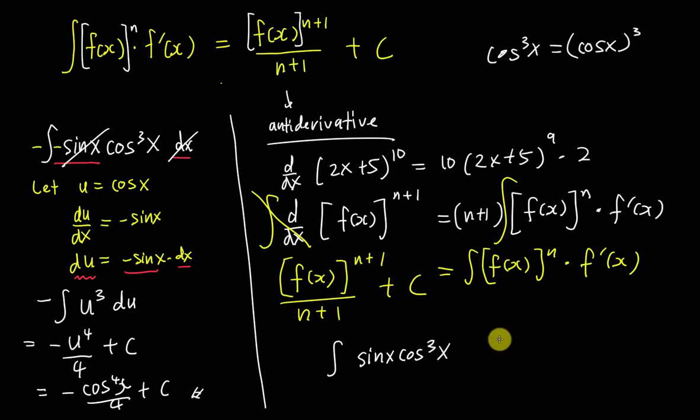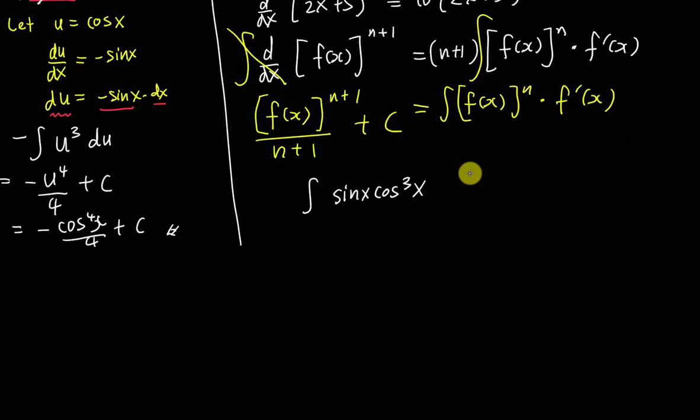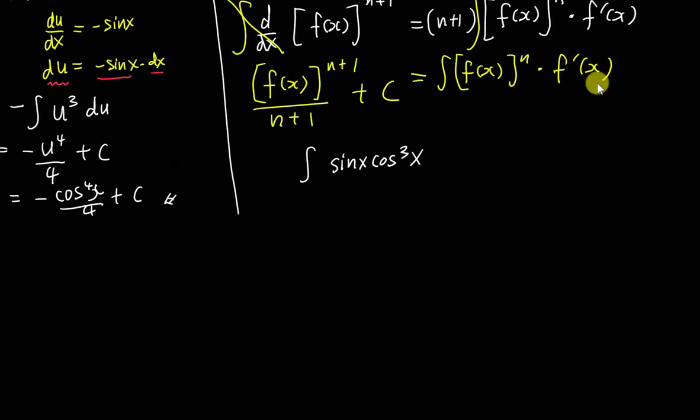If I want to use this formula, what I want to understand is: I can see this is like cos x to the power of 3, and then I must have something like the derivative of cos x. So normally I will rewrite something like this: this one is cos x to the power of 3.